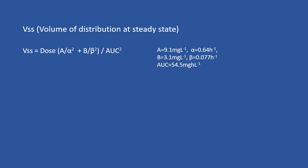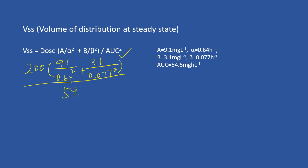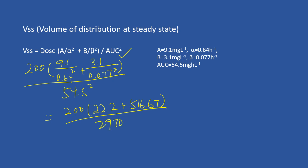Next, you need to calculate the volume of distribution at steady state using this equation. Putting in all the values: 200 times (9.1 divided by 0.64 squared plus 3.1 divided by 0.077 squared), with the whole thing divided by 54.5 squared. This gives 209.1 divided by 0.64² plus 3.1 divided by 0.077², yielding 516.67 divided by 2970.25... wait, the numerator values sum appropriately. The answer for VSS is 36.28 liters.